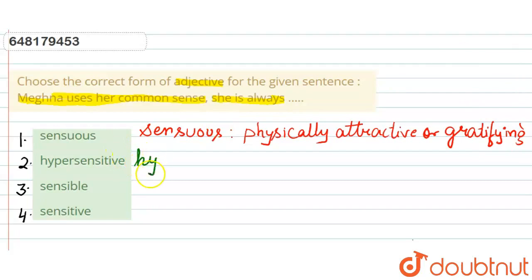Then the second option that we have is hypersensitive. Hypersensitive ka matlab kya hoga? The person who is abnormally sensitive.